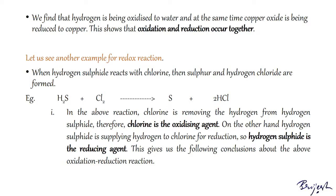In the same reaction, chlorine is changing into HCl — hydrogen is being added to chlorine. By definition, the addition of hydrogen to a substance is called reduction, so chlorine is being reduced to hydrogen chloride. Therefore, chlorine, which removes hydrogen from hydrogen sulfide, is the oxidizing agent, while hydrogen sulfide, which supplies hydrogen to chlorine for reduction, is the reducing agent.